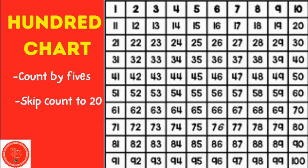Now let's skip count to twenty. When we skip count, we skip a number. So we're going to start with two. We're going to skip the number three and go to four and so on. So we have two, four, six, eight, ten, twelve, fourteen, sixteen, eighteen, twenty. Good job.